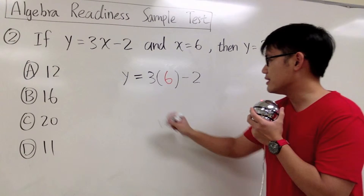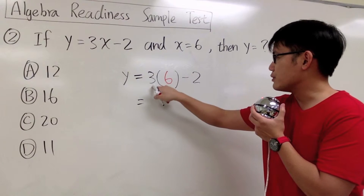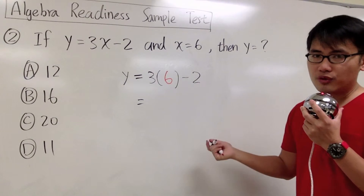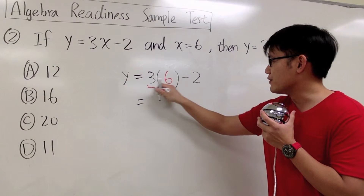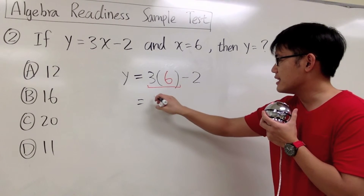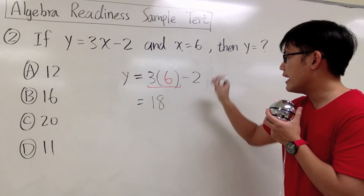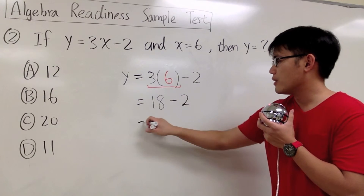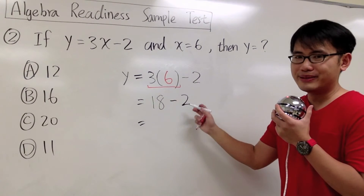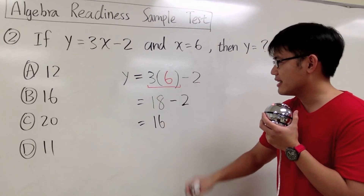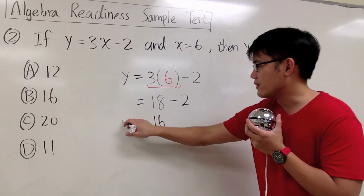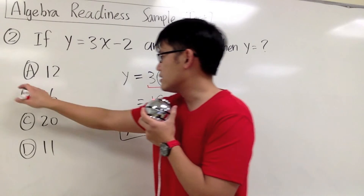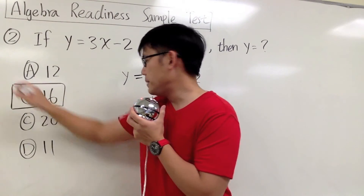To continue with this, we have 3 times 6 minus 2. By the order of operations, we do the multiplication first. 3 times 6 gives us 18, and then we minus 2 from there. 18 minus 2 gives us 16, and that's the value for y in this case. The answer to this will be b.